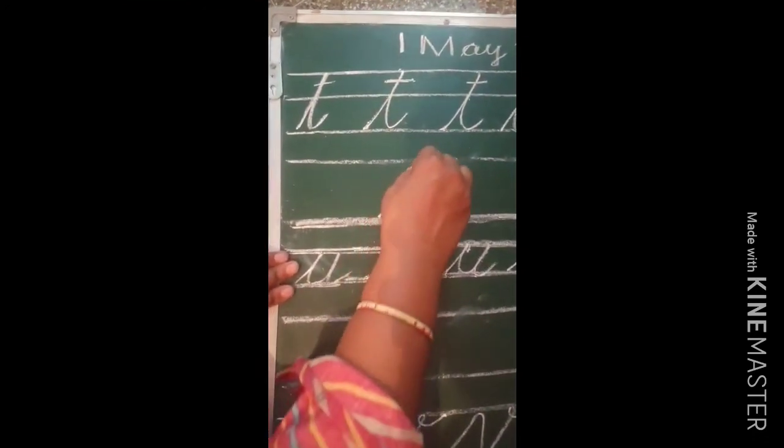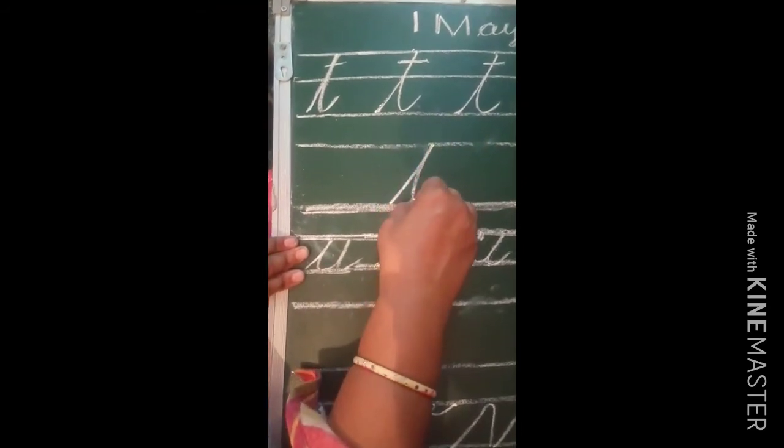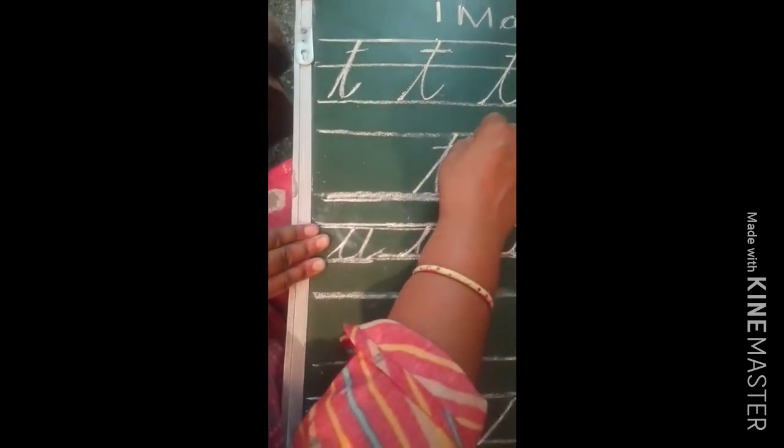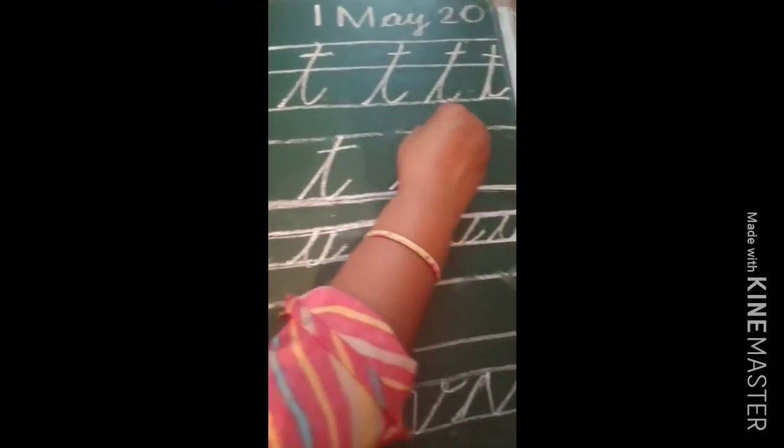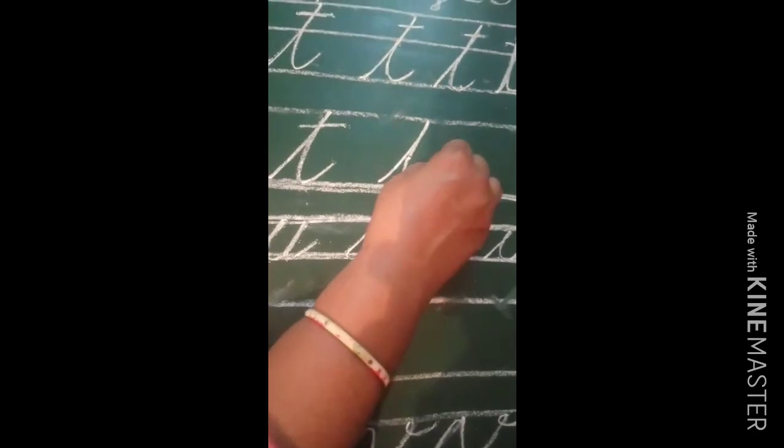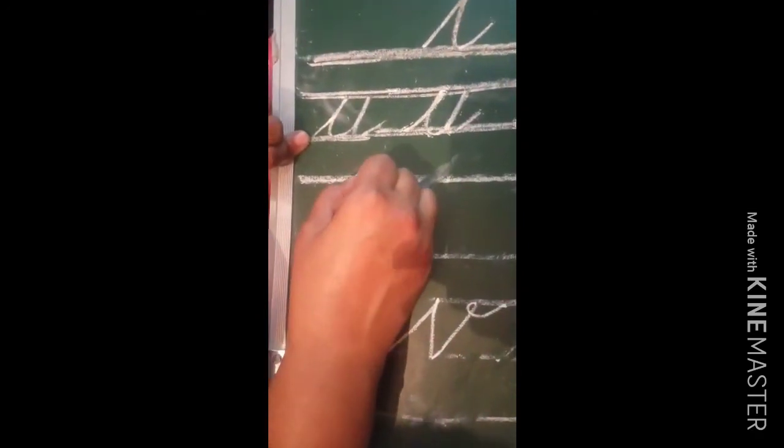Again, we will see how to make letter T: go upside in the middle line, come down, make a turn — this is letter T. Again: go upside, come down, make a turn — letter T. Now we will make U: go upside, come down, make a turn, come back, give a turn — letter U. Again: go up, come down, go upside, come down, make a turn — letter U.